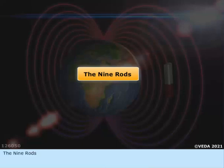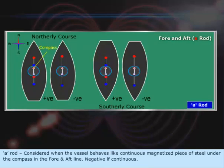The Nine Rods. A-Rod: Considered when the vessel behaves like a continuous magnetized piece of steel under the compass in the fore and aft line. Negative if continuous.